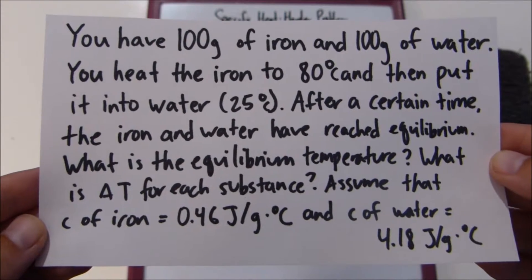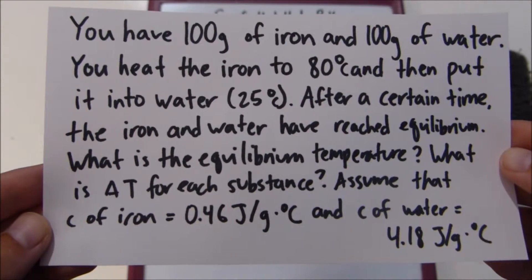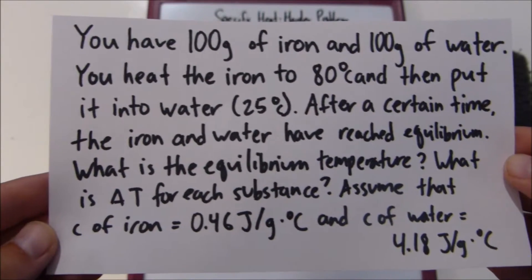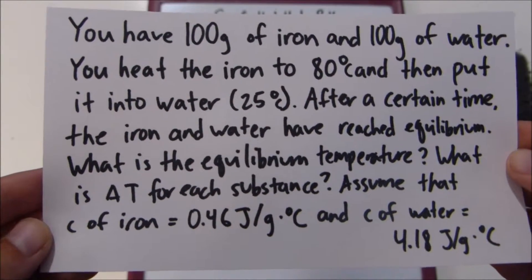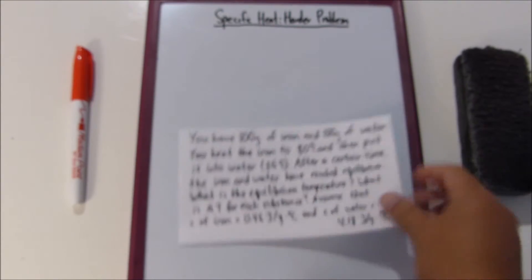And then assume that the specific heat of iron is 0.46 joules over grams times degrees Celsius and the specific heat of water is 4.18 joules divided by grams times degrees Celsius. So that's a lot to take in.